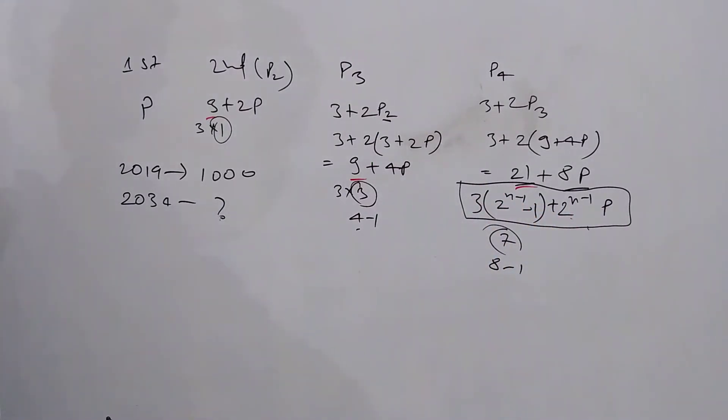And now that we have got the pattern, assume 1000 is the population in 2019, which is our first term. Then 2034 becomes our 16th term of the series. So for the 16th term we can directly put the formula.